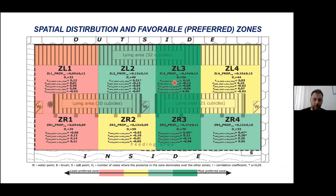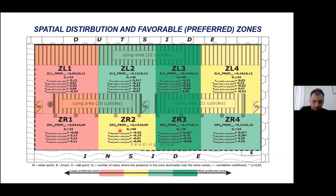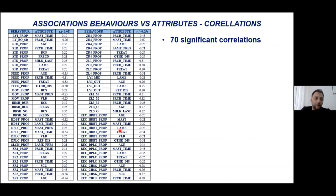Regarding the preferred zones, the enclosed area is colored by zone: those in green are the most preferred zones and those in red are the least preferred. As you can see, in general the preferred zones were the mid zones. The exception is zone four in the right corner, which is preferred because mineral and salt cubicles were present there — and agonistic interactions were also much higher in that location compared to all others.